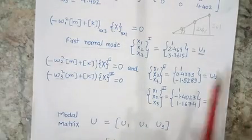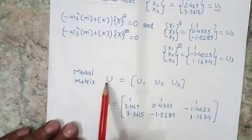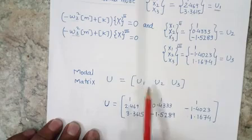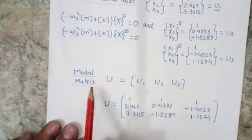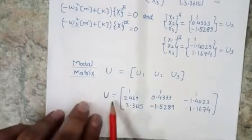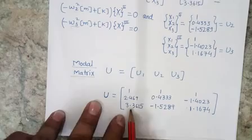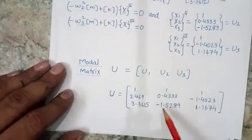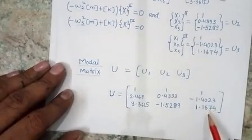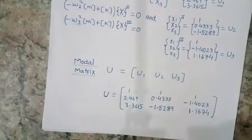I can rearrange these three normal modes into a single matrix, and this combined normal modes matrix is known as the modal matrix. In the modal matrix, the first column represents the first normal mode u1, and similarly the second and third columns represent the second and third normal modes respectively.